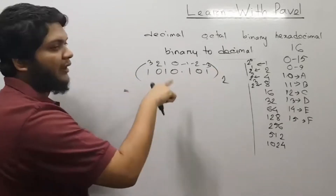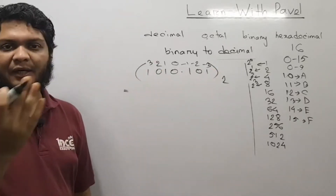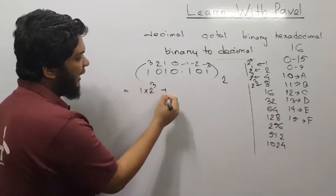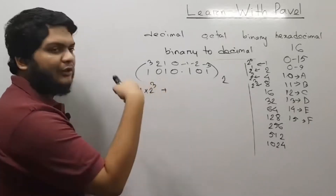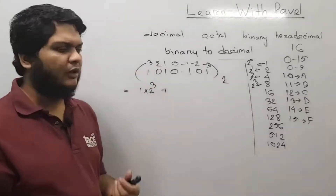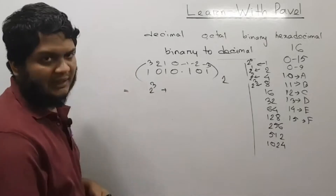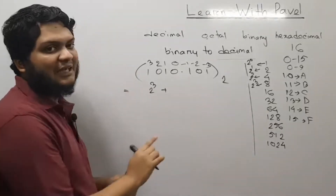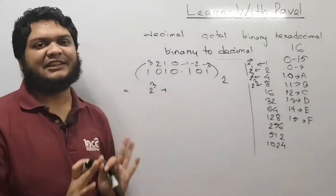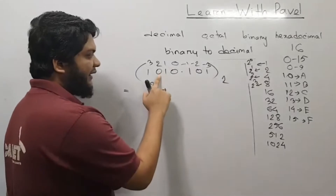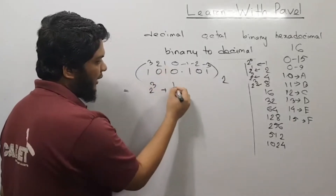You will have to take 2 to the power. If you want to solve this problem, you will allow yourself to solve it. We will have 1 into 2 cube plus 0. You will have to take 1 into 2 cube. 2 cube will be in the second option. 2 to the power is 1.